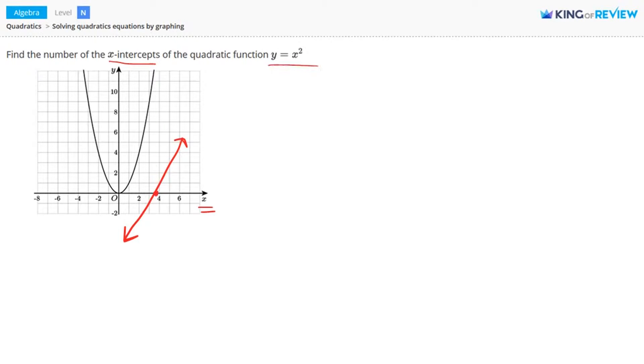Now our function y equals x squared. When you graph that, you get a parabola like this. Now where does this parabola cross or touch the x-axis at? Well, it does right here. So you can see that it crosses or touches the x-axis at x equals zero. That's right there. So it has one x-intercept.